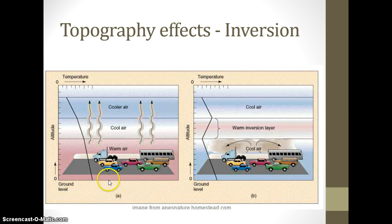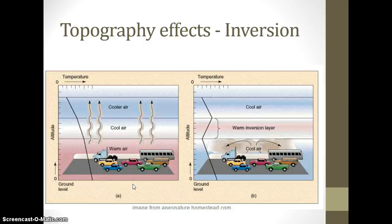In picture one — similar to what we find in Bangkok — there's lots of traffic producing ozone, but we've got warm air by the ground being radiated off the surface. As the air rises it cools, which is normal for the troposphere. In this situation, ozone can just be moved off; there's air blowing through and nothing trapping it.